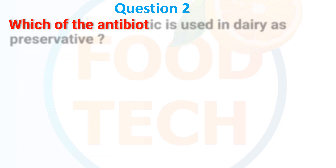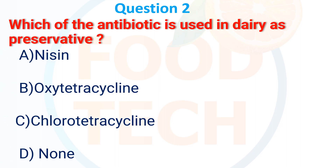Which antibiotic is used in dairy as a preservative? A. Nisin, B. Oxytetracycline, C. Chlortetracycline, D. None. The answer is A. Nisin.